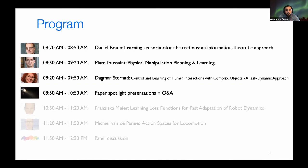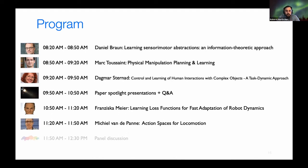After these three first presentations, we have paper spotlight presentations. We have six accepted papers at the workshop. Each of the speakers will receive five minutes to present their work. And after the first block of three presentations, we will have some time for Q&A, then the second block of three presentations and some time of Q&A. When the spotlight presentations are over, then we have Francisca Mayer from Facebook talking about learning loss functions for fast adaptation. And last but not least, Professor Michel Van de Panne from University of British Columbia presenting very cool work about action spaces for locomotion.